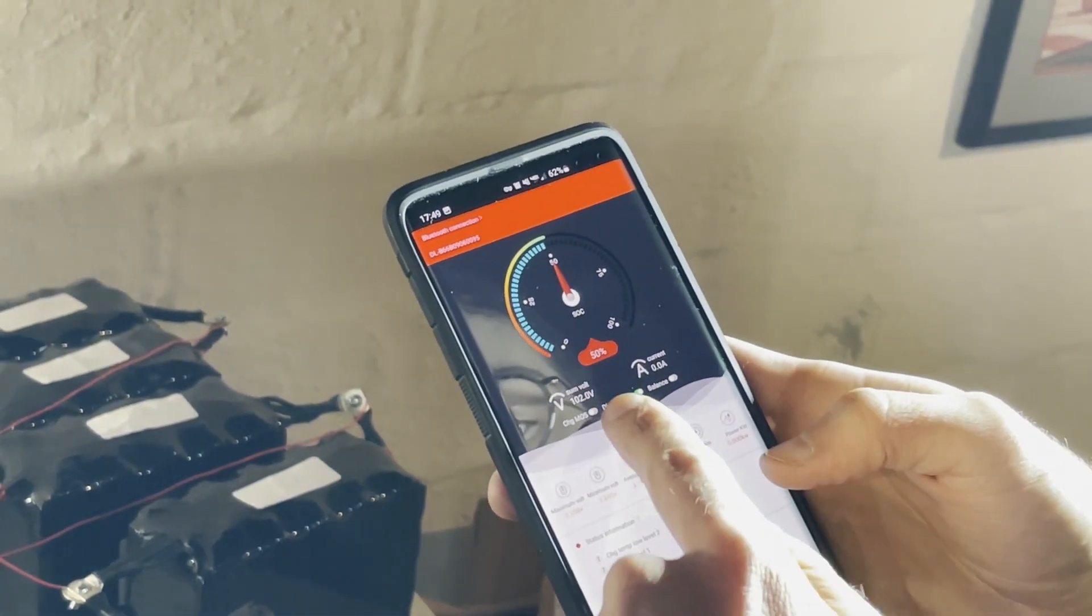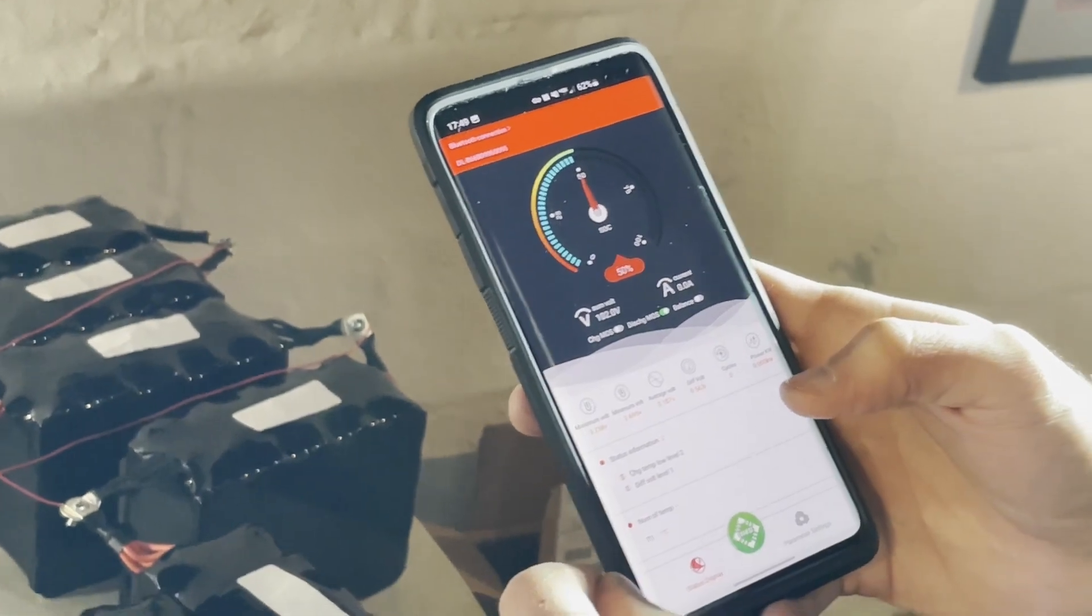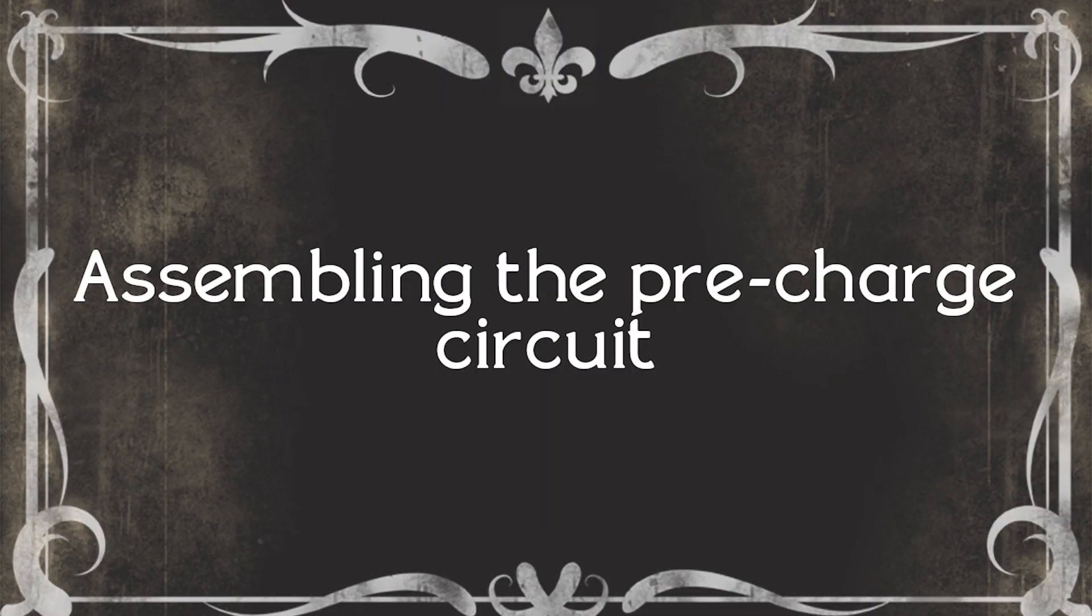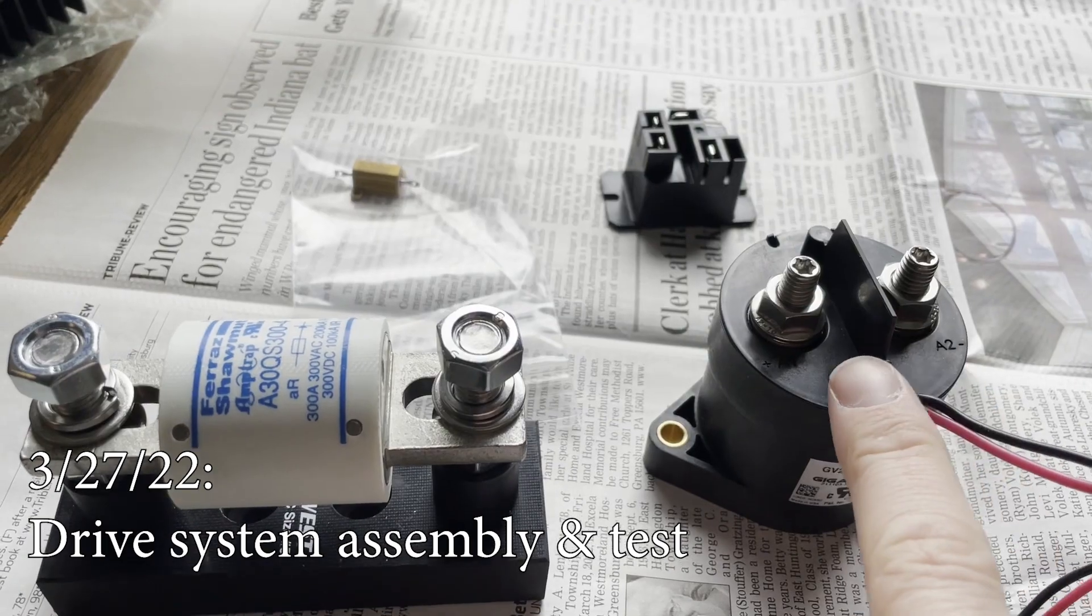Time to build a pre-charge circuit. So we've got a contactor, a big fuse, a resistor, a pre-charge relay. This is the resistor we're going to be using, a Dale.